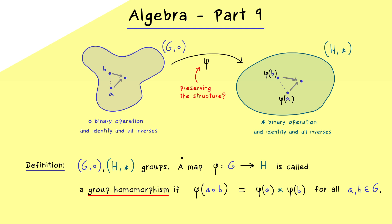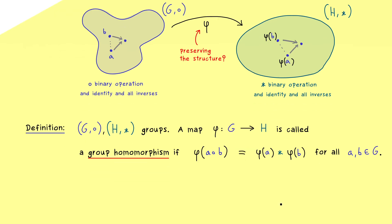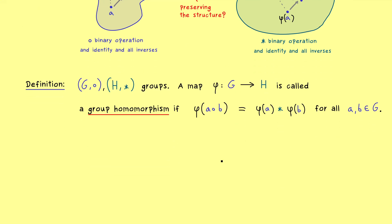First this looks a little bit strange because before we already said that we also want to preserve the identity and all the inverses. However, now the good thing is that this simple definition already implies the preserving of the additional structure. This means that we don't have to put it into the definition because we can already prove it by using this formula here.